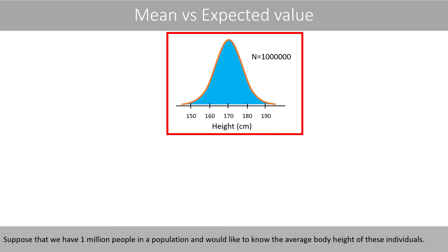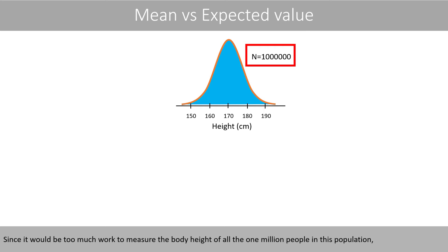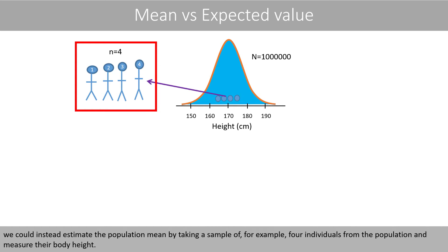Suppose that we have one million people in a population and would like to know the average body height of these individuals. Since it would be too much work to measure the body height of all one million people in this population, we could instead estimate the population mean by taking a sample of, for example, four individuals from the population and measure their body height.